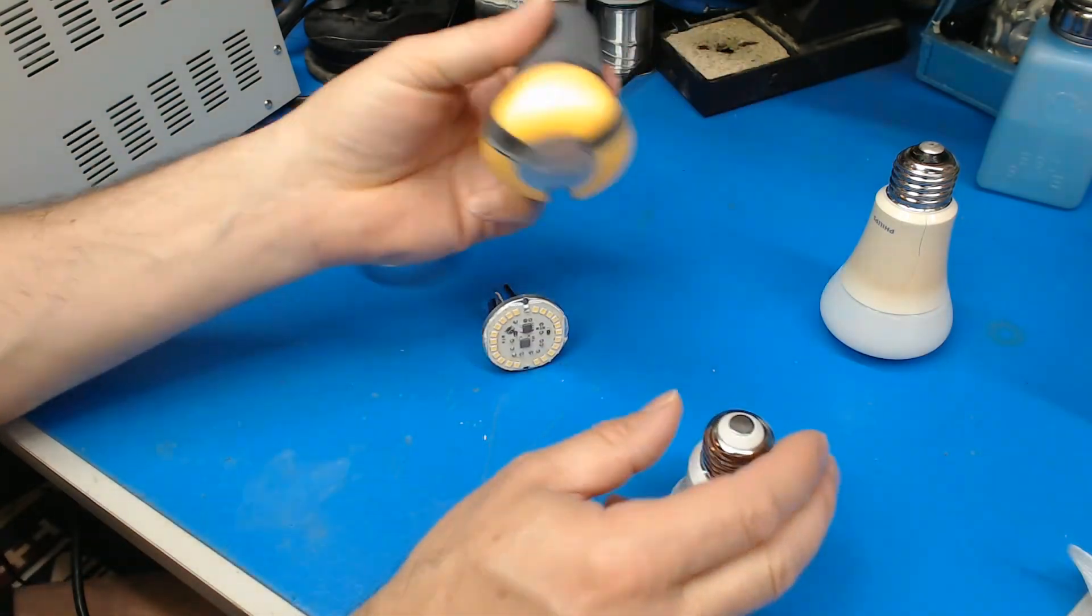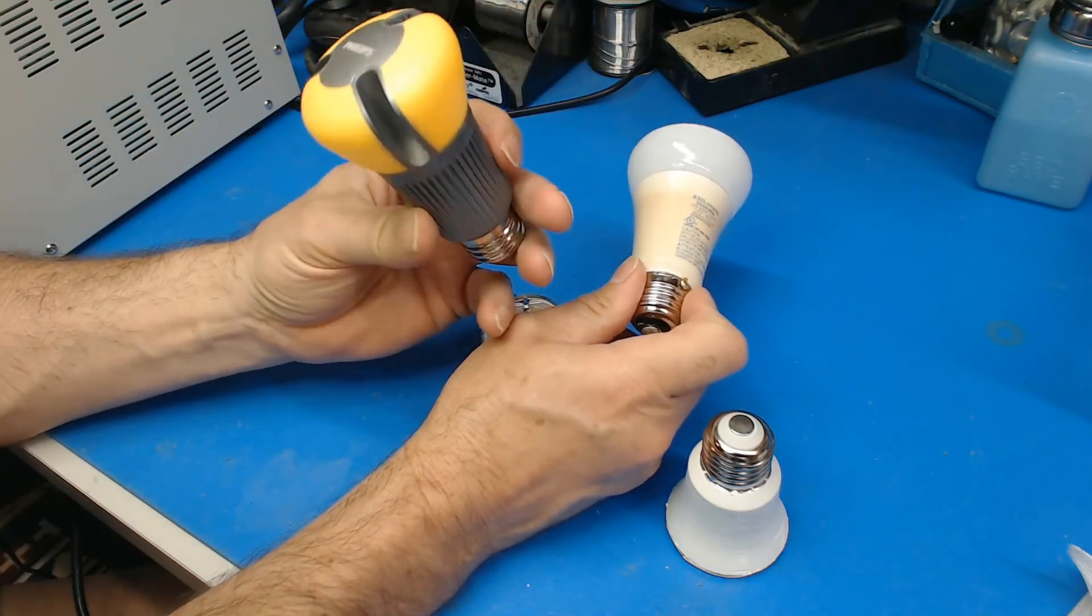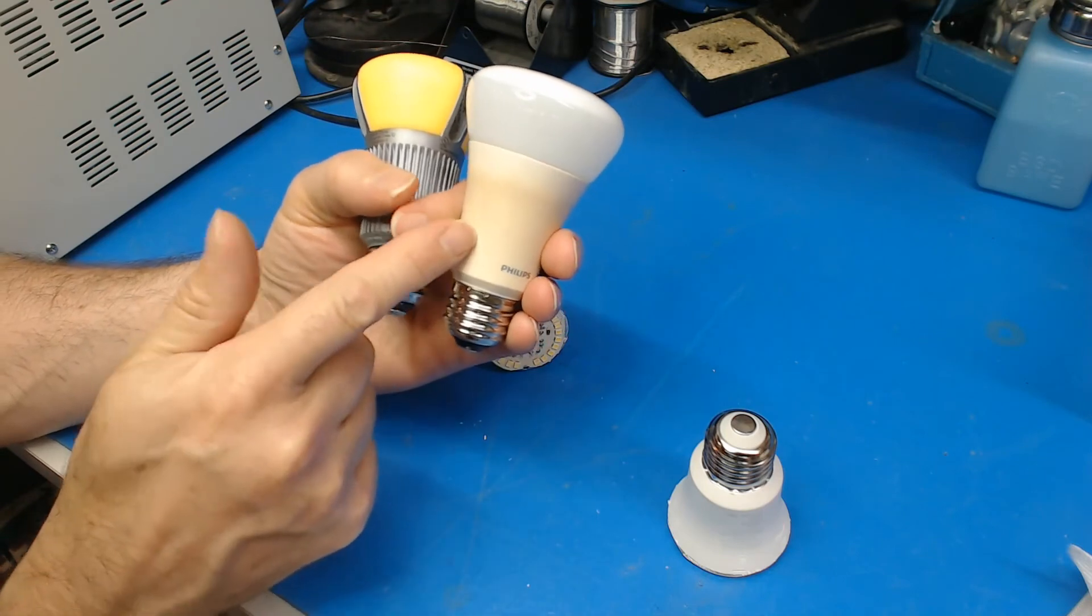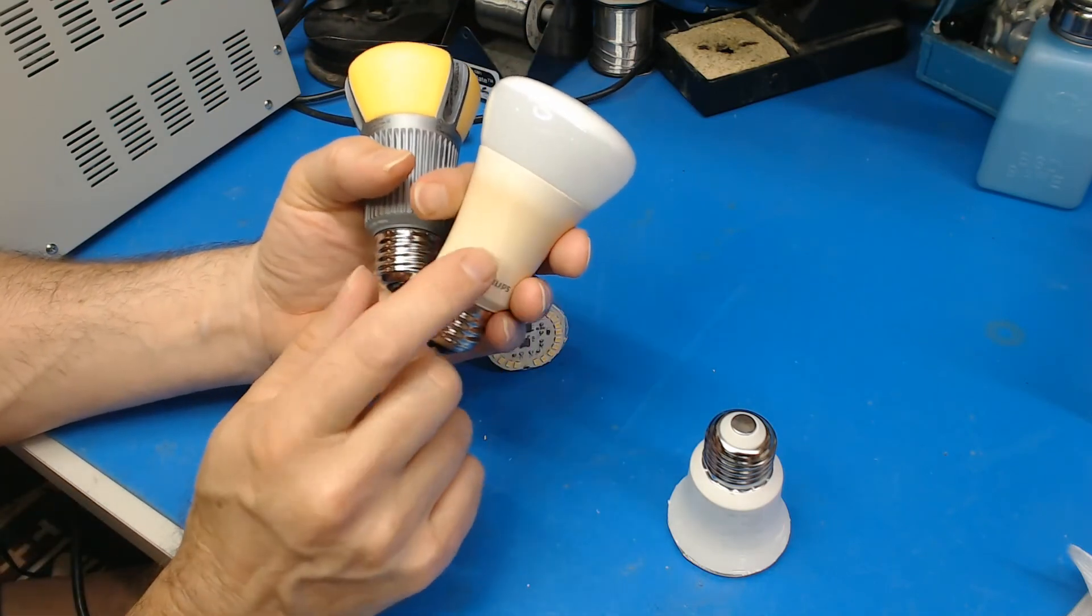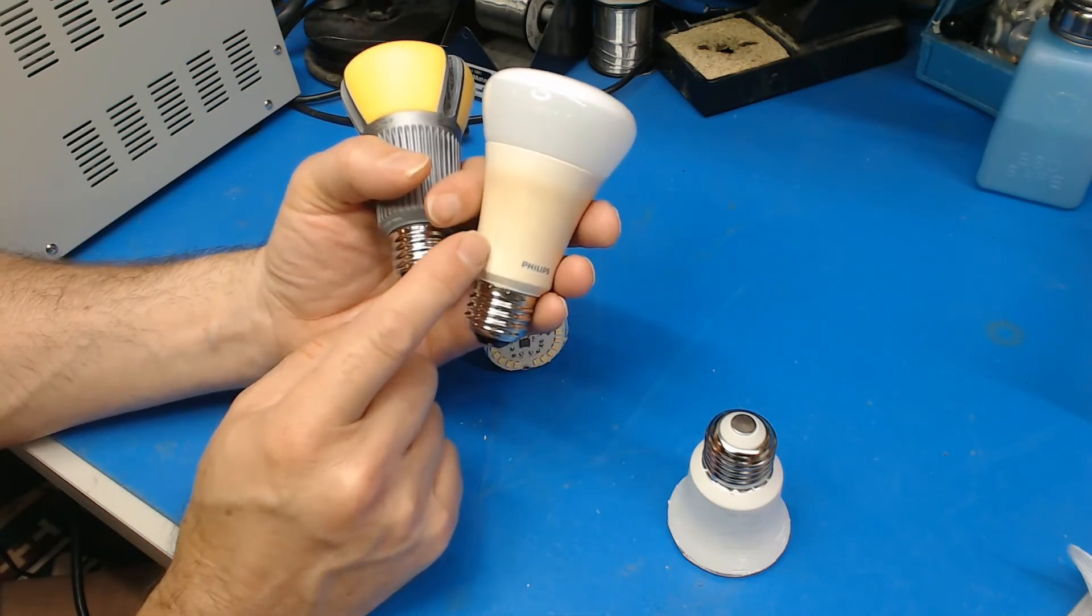So looking at their first generation bulb, their second generation bulb—so this one actually has a crack due to the heat. You can see the discoloration, and this one still works, but I imagine that I'll be tearing this one down eventually.